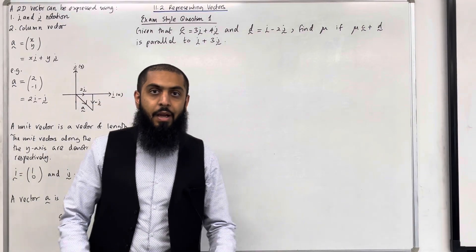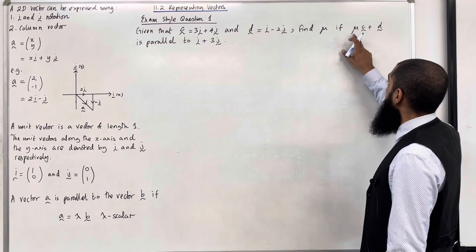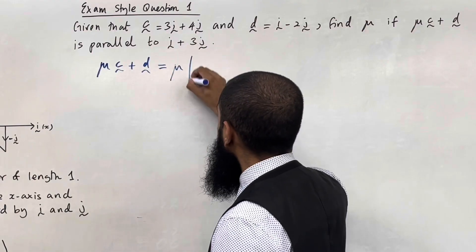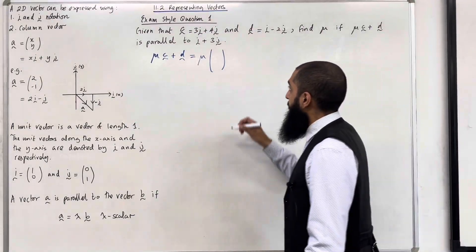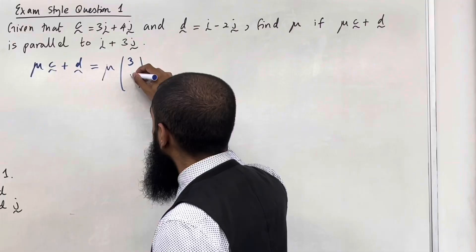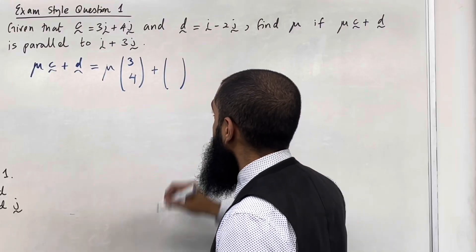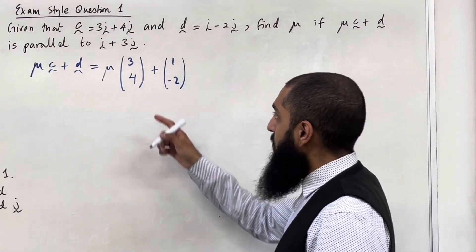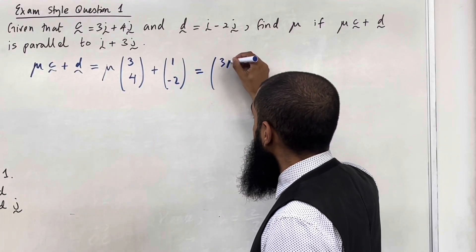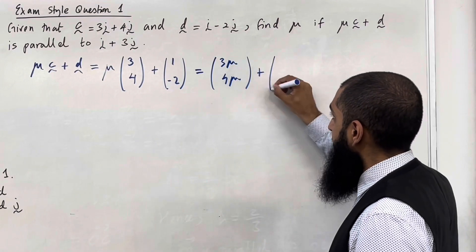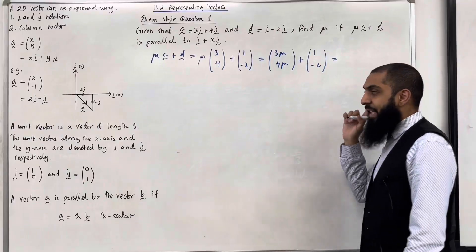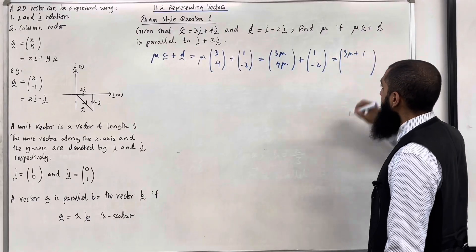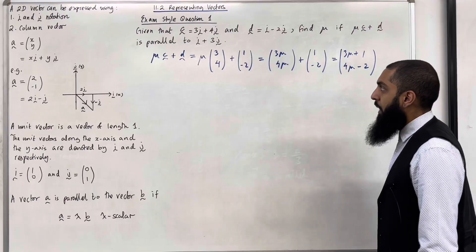Let's have a look at the solution. I'm going to first of all simplify the vector mu C plus D. So we have mu lots of the vector C. I can rewrite C as a column vector (3, 4) — the i component is 3 and the j component is 4 — plus the vector D. Rewriting D as a column vector, the i component is 1 and the j component is minus 2. Now we can multiply 3 and 4 by mu, giving us 3mu and 4mu.